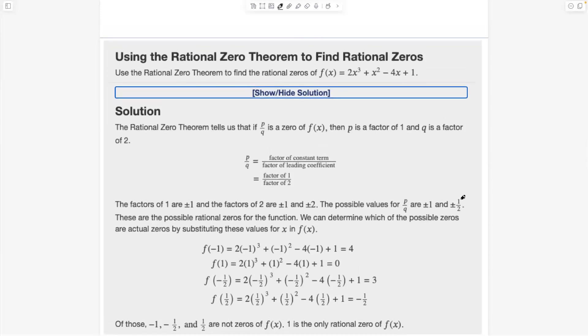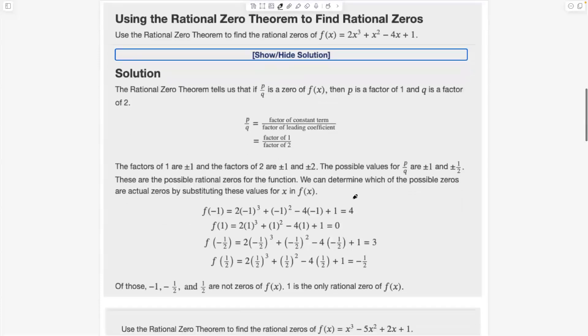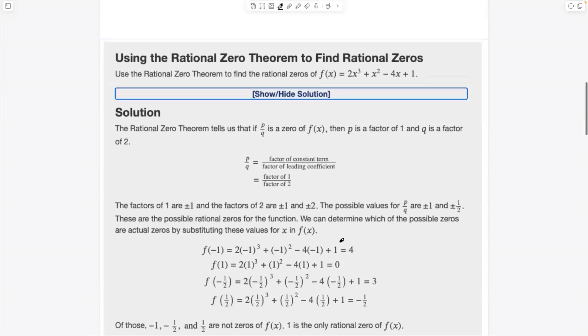Again, it's possible none of them work. But we start plugging in. And you could see they've done the math for us. If we plug in a negative one, we don't get zero. He's out. If we plug in a positive one, we get zero. Good. Then what we would do is factor out x minus one. It's always x minus the root out of this guy and reduce it to a quadratic. And then we'd use quadratic formula to find the other two.